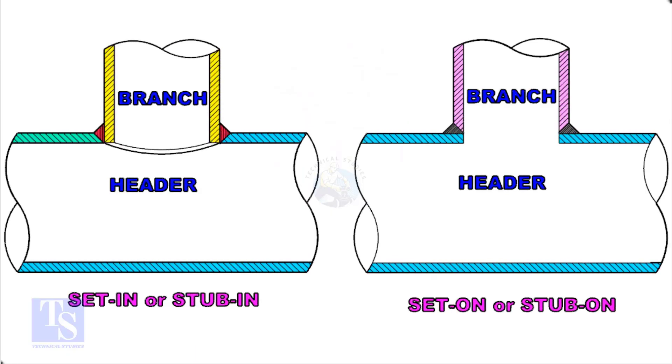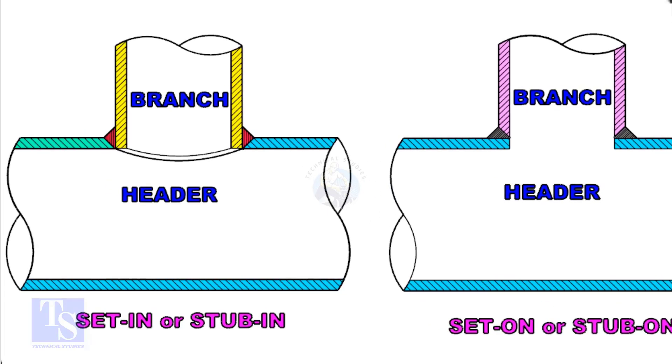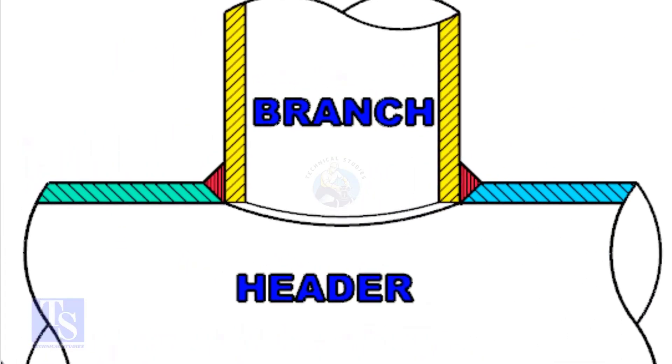Let us check the difference between a stub-in and stub-on connection. Look at the stub-in joint, the bevel is prepared on the header, and the branch pipe is in the header.